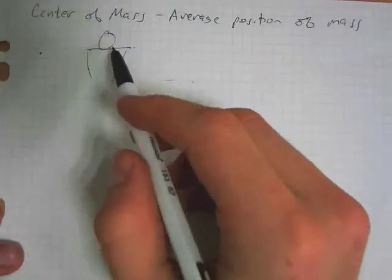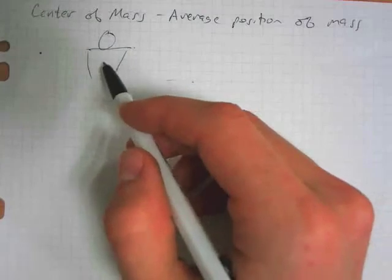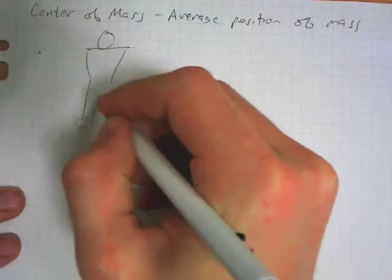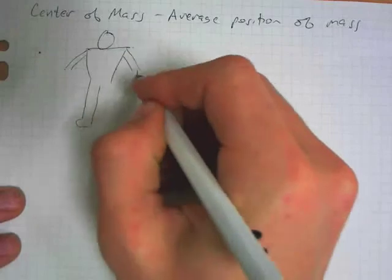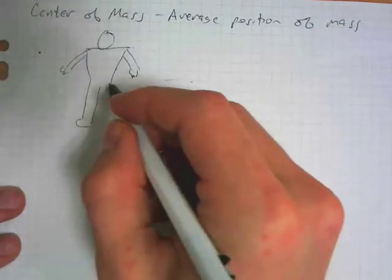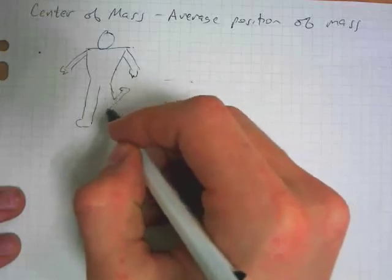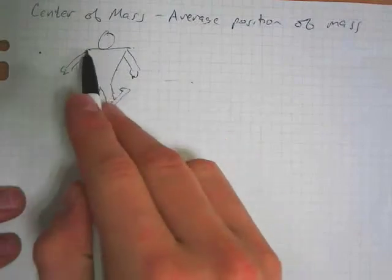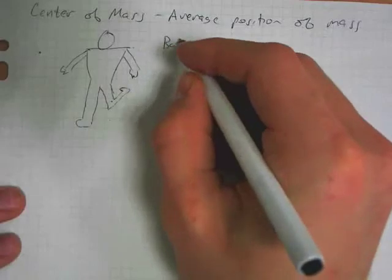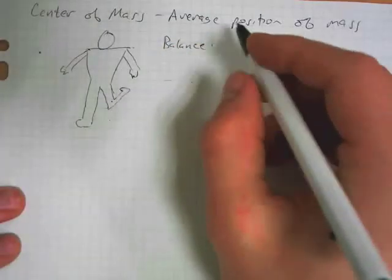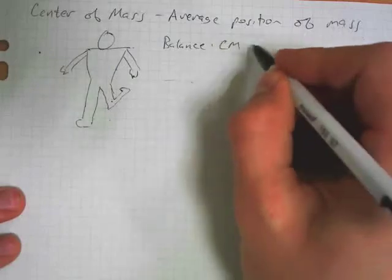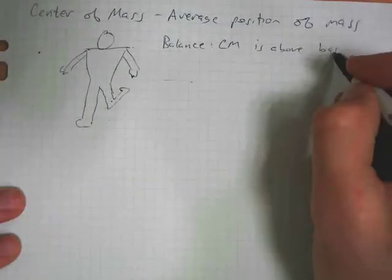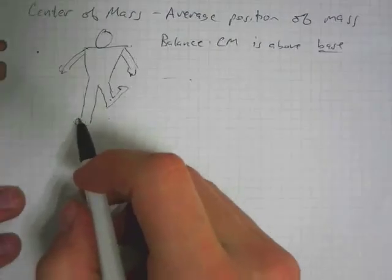We kind of instinctively know how to center our mass. When we stand on one foot, you know, kick our leg up to stand, we kind of instinctively tilt our body, because in order to balance, your center of mass needs to be above the base, in this case your foot. You kind of instinctively lean to the side.